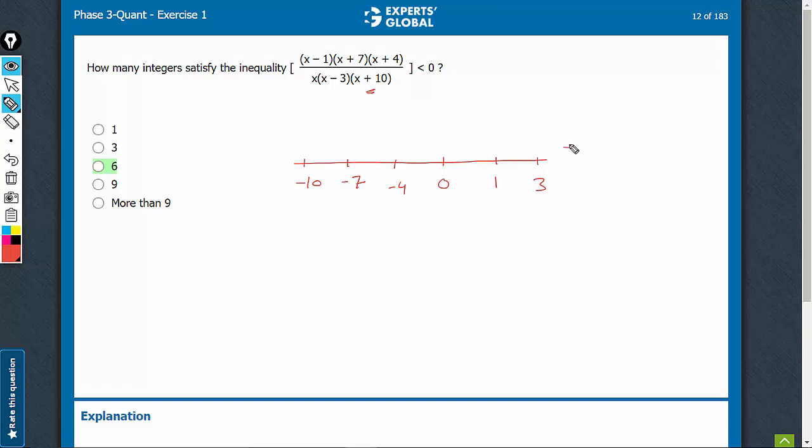Rightmost value is always positive, followed by alternate negative and positive signs. We need negative values, and therefore, these are the ranges.